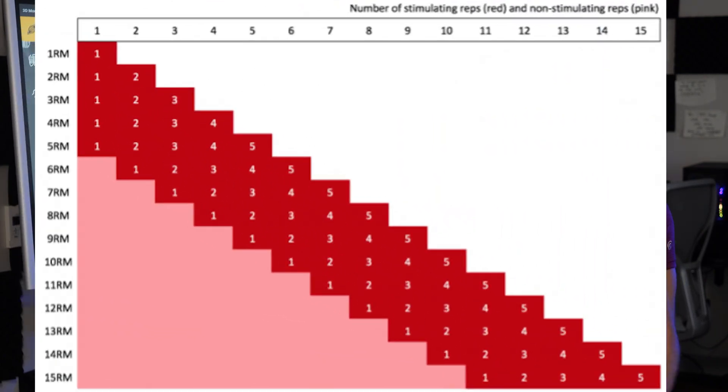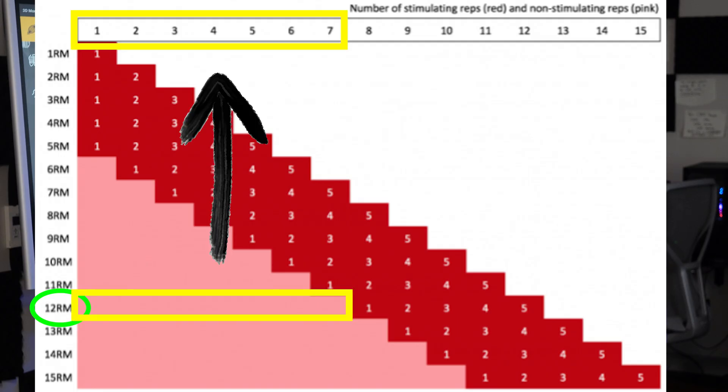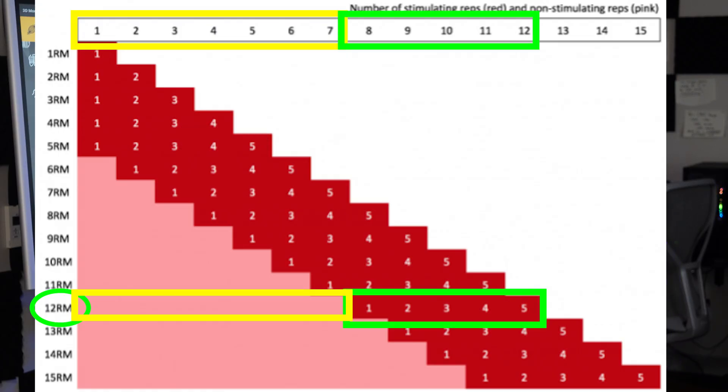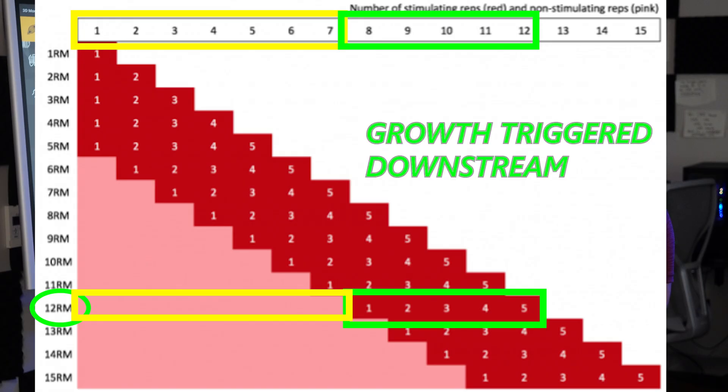If we were to be doing a 12 rep max on biceps curls, in which we perform 12 reps to failure, what the model suggests is that those first seven reps are more or less a warmup without much growth stimulus. And those last five reps, eight, nine, 10, 11, and 12, are where the vast majority of the growth occurs or is at least triggered.